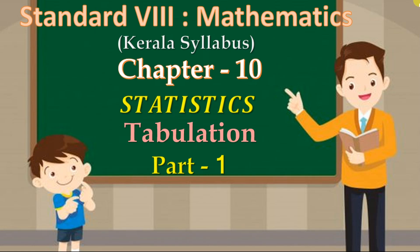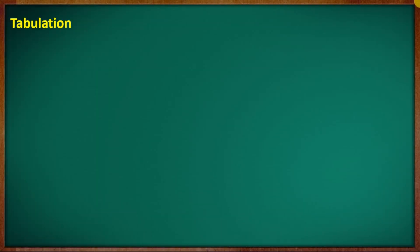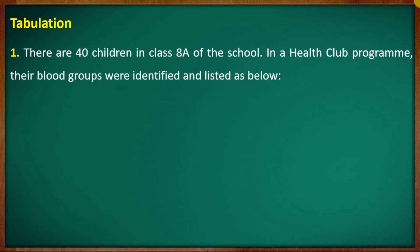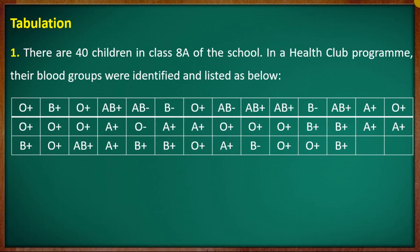Now we are going to discuss Chapter 10. We are going to discuss statistics, and the first section is going to discuss tabulation. We are going to look at a question. There are 40 children in a class at a school. In a health club program, their blood groups were identified and listed below.